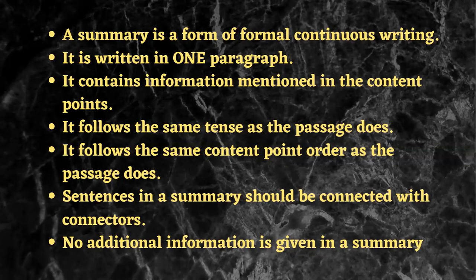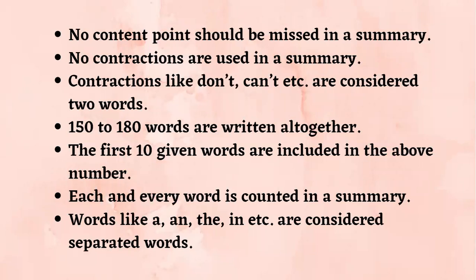No additional information is given in a summary. No content point should be missed. No contractions are used — even if you use contractions like 'don't' or 'can't,' they count as two words. You write 150 to 180 words altogether. The first 10 words given in the question are included in that number, so 150 words means you've actually written 140 of your own words. Articles and prepositions like 'a,' 'the,' 'in,' 'on,' 'to,' 'two' are all counted as separate words.